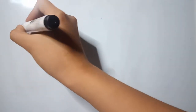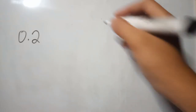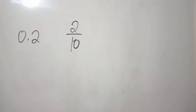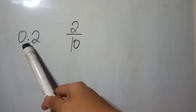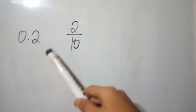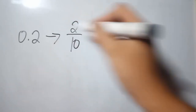Now we will learn how to convert decimal to fraction. Let's say 0.2, read as 2 tenths, so we'll have 2 over 10. To make it easier, I count the number of digits after the decimal point and that's the number of zeros I will use. Here there is only 1 digit after the decimal point, so we use 1 zero — giving us 2 over 10 because 10 has only 1 zero. So the fraction form of 0.2 is 2 over 10.